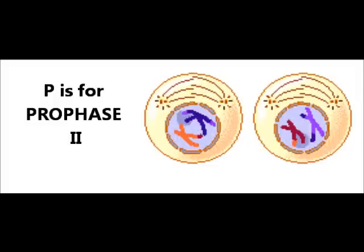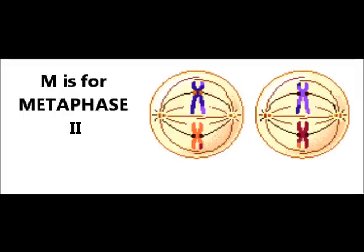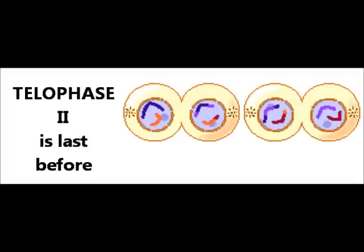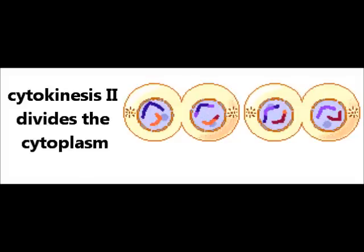P is for prophase two, M is for metaphase two, anaphase two comes after that. Telophase two is last before cytokinesis two divides the cytoplasm.